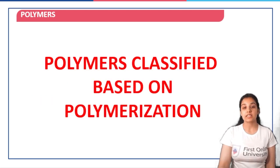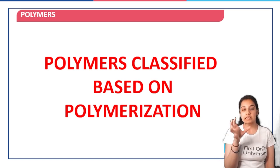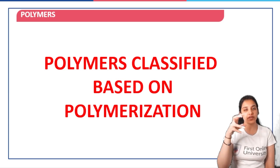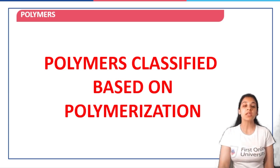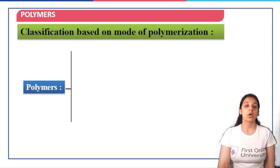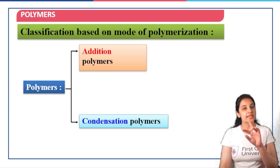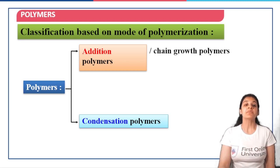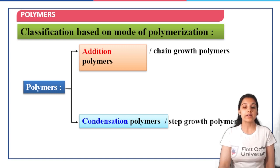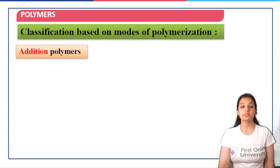The next classification of polymers is based on the mode of polymerization. Since this is a smaller classification, I have included it in this lecture only. Based on the mode of polymerization, polymers can be classified into addition polymers or condensation polymers. Addition polymers are also known as chain growth polymers, and condensation polymers are also known as step growth polymers.